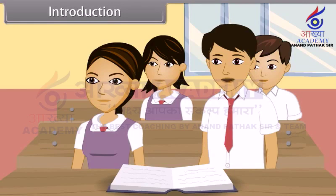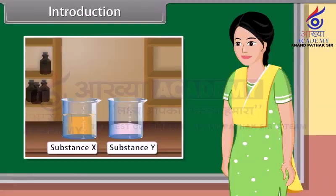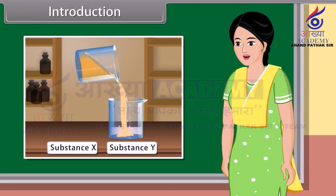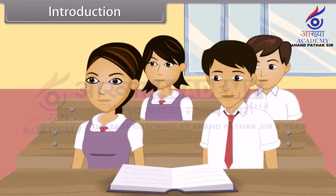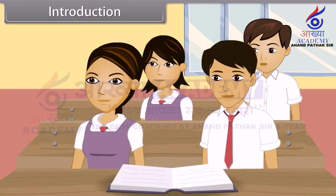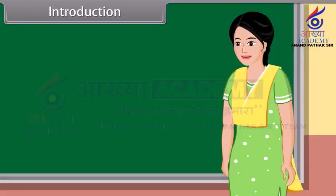Ma'am, what are the chemical reactions? A chemical reaction is a chemical change which forms new substances. And what are polyhalogen compounds, ma'am? Polyhalogen compounds are the carbon compounds that contain more than one halogen atom.